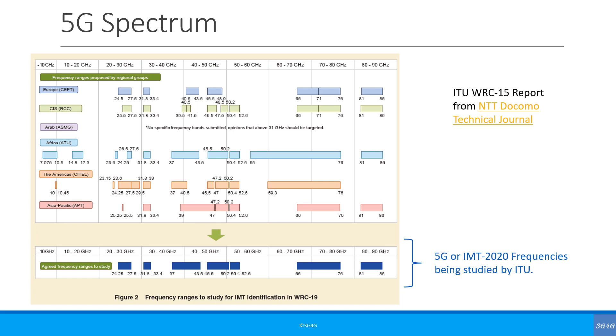So, for 5G it came up with a list of frequencies that could be officially studied for 5G. There is another ITU World Radio Conference, WRC 19, later this year. Many of these frequencies will officially be allowed for 5G based on the study results.